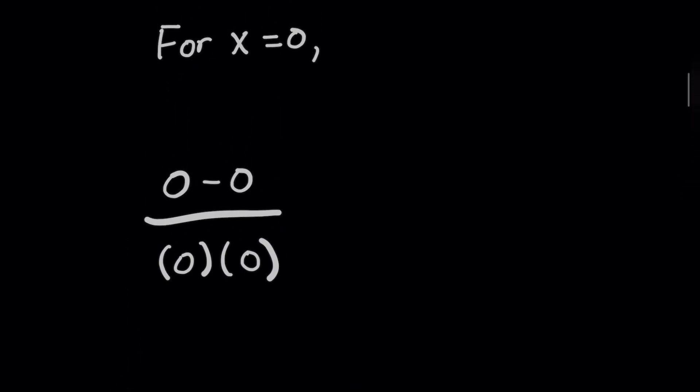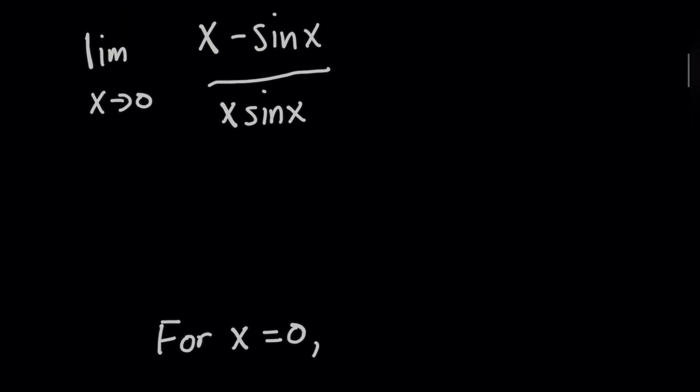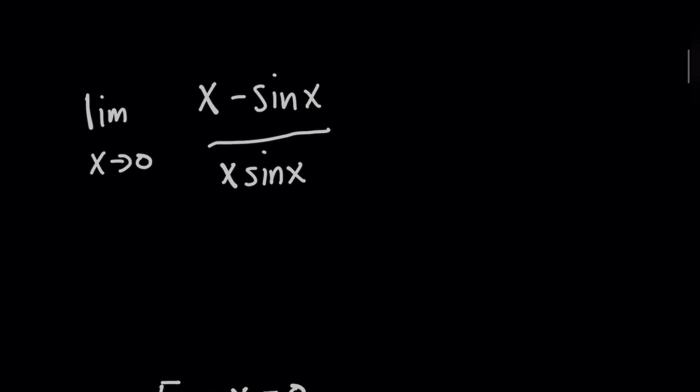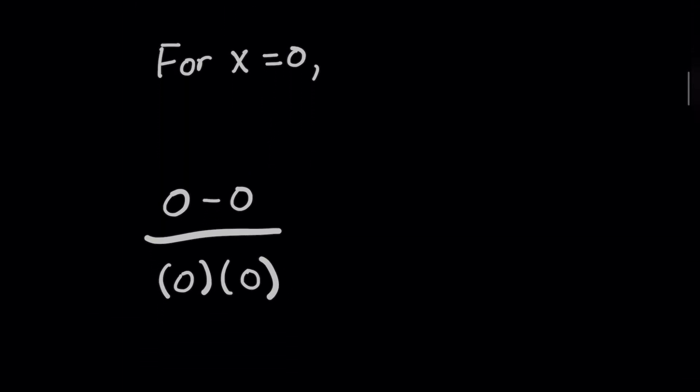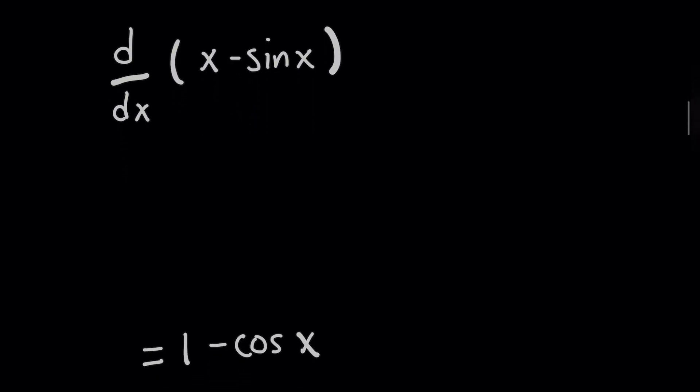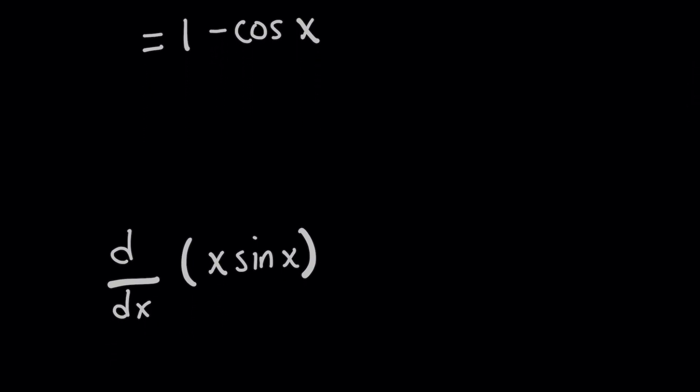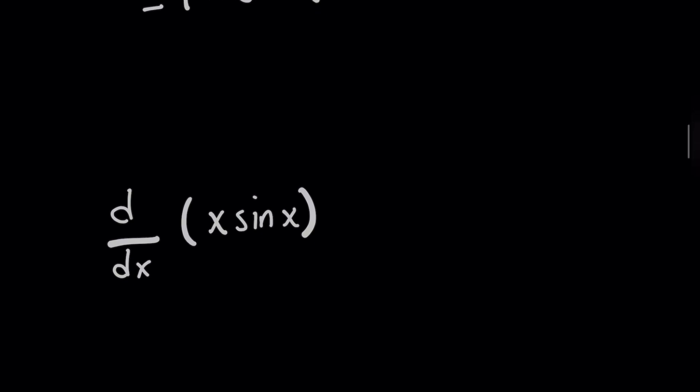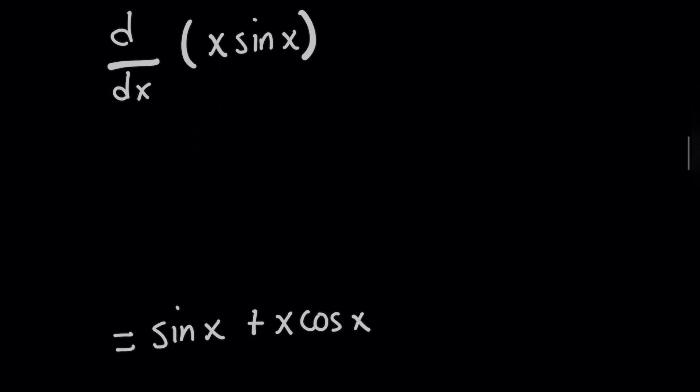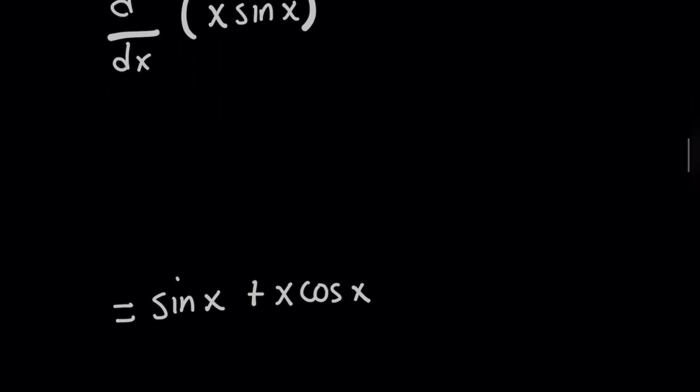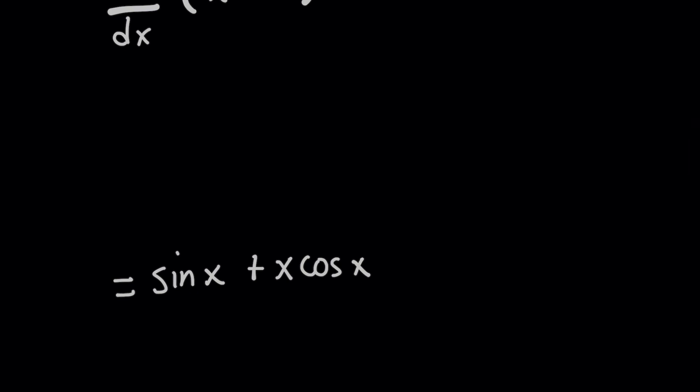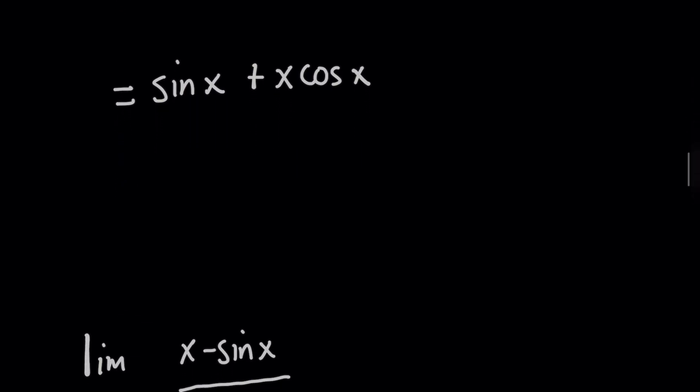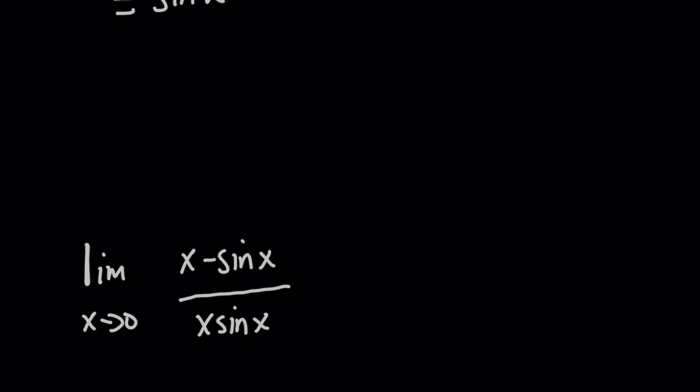So for this numerator right here, when I rewrote the problem, this x minus sine of x, I'm going to go ahead and find its derivative right now. So for d over dx of that expression, as you know, this will be simply 1 minus cosine of x. And then for the denominator from above, this x sine of x expression, I'm going to do the same thing using the product rule here. And that's going to give me a derivative that ends up to be sine of x plus x cosine of x.